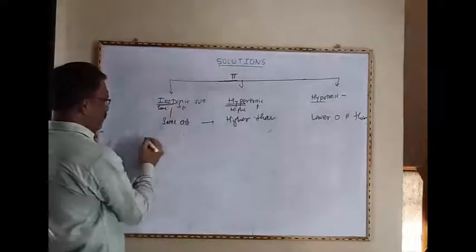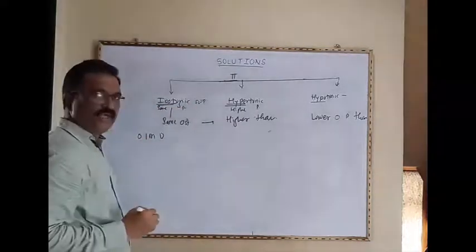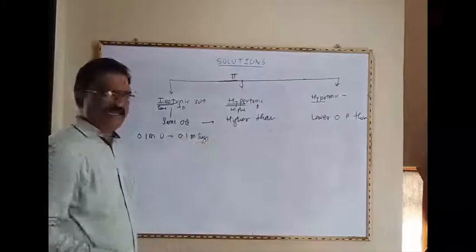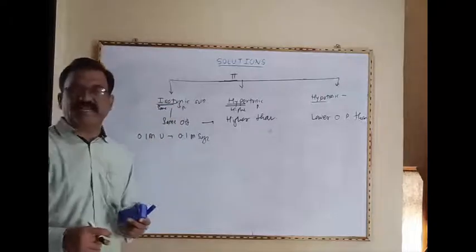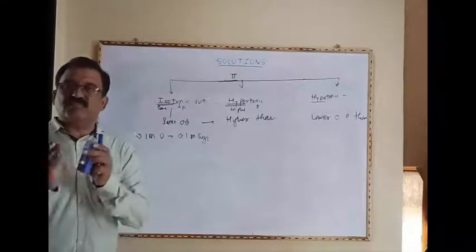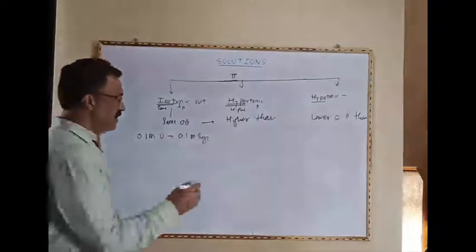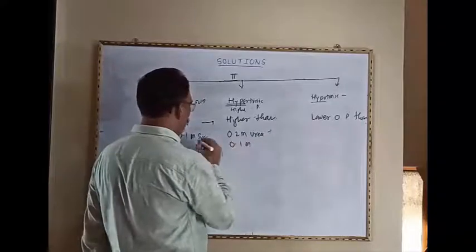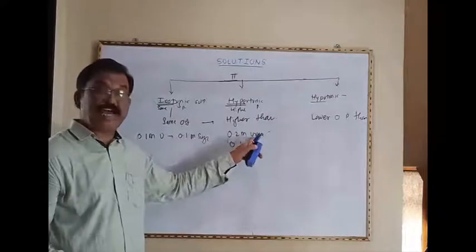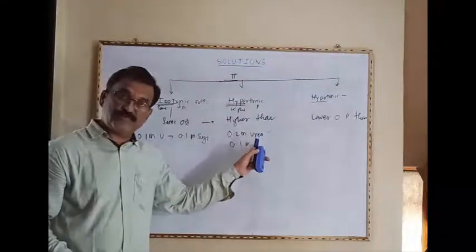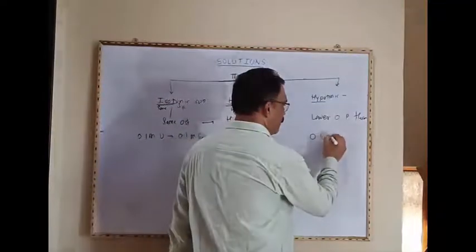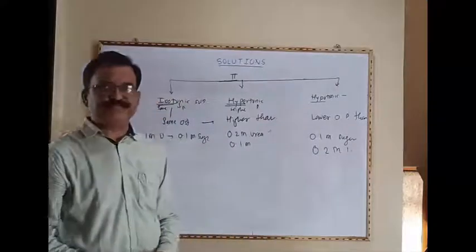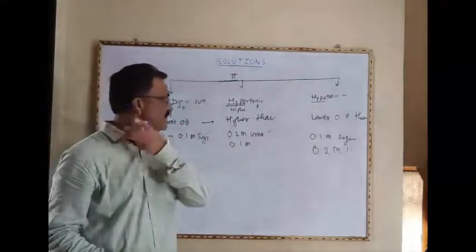For example, 0.1 molar urea is isotonic with 0.1 molar sugar solution because they have the same concentration and hence the same osmotic pressure. Same concentrated solutions are isotonic with each other. A 0.2 molar urea solution is hypertonic compared to a 0.1 molar sugar solution. Conversely, 0.1 molar sugar solution is hypotonic compared to 0.2 molar urea solution. Iso means same, hyper means high, hypo means low.